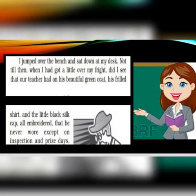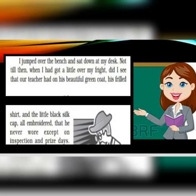Here we get to know how M. Hamel, the teacher, was looking different that day. M. Hamel was dressed in his formal dress, which he used to wear only on inspection days or prize distribution days. He was in his beautiful green coat, frilled shirt and embroidered silk hat. In this way, M. Hamel was dressed in a different way — that was what was unusual about his dress on his last day in the school.